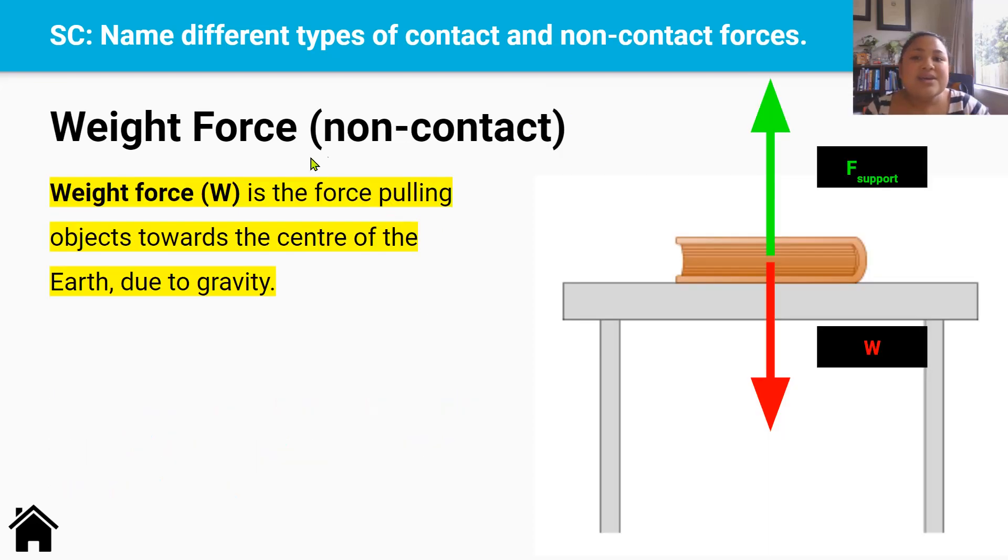Now here is a non-contact force. We call this force weight force. And it's the force pulling objects towards the center of the earth due to gravity. So this table and this book are being pulled closer to the center of the earth by this force called a weight force, and its symbol is a W. If weight force wasn't there, this book and this table would just float off the ground, and would just be randomly floating around.